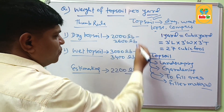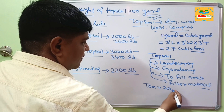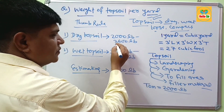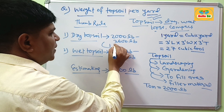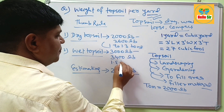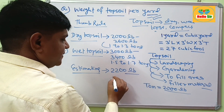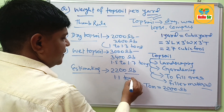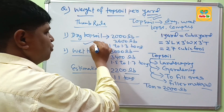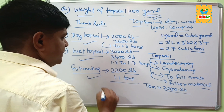If you want to measure this quantity in tons — 1 ton equals 2000 pounds — dry topsoil will be 1 to 1.3 tons per yard, and wet topsoil will be 1.5 to 1.7 tons per yard. This is the weight of topsoil per yard for dry and wet conditions and for estimating purposes.